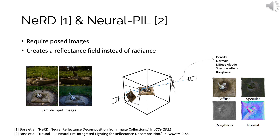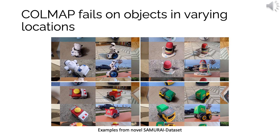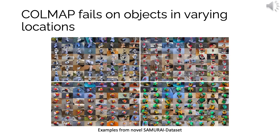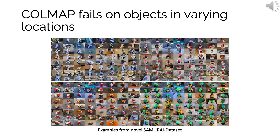However, NeRF, NERD, and Neural Pill require ground truth camera poses to work. We created a challenging dataset of objects captured under different illuminations and locations to mimic our practical problem setting of in-the-wild image collections. Here, COLMAP and other methods fail to recover poses, and the aforementioned methods such as NERD or Neural Pill cannot work.